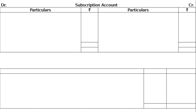On both sides, write particulars and amount columns. First, they mentioned subscription in arrear for the last year: balance brought down 500 rupees. Subscription received in advance on 31st March of last year — balance brought down — people paid 1100 rupees in advance last year for this year.